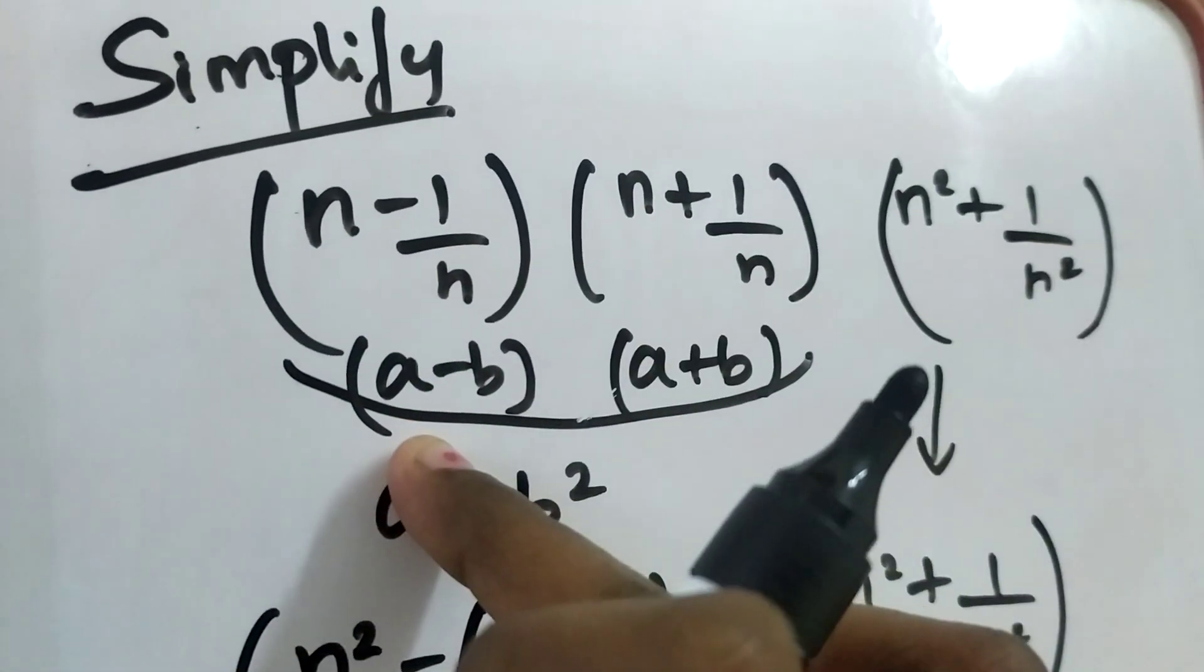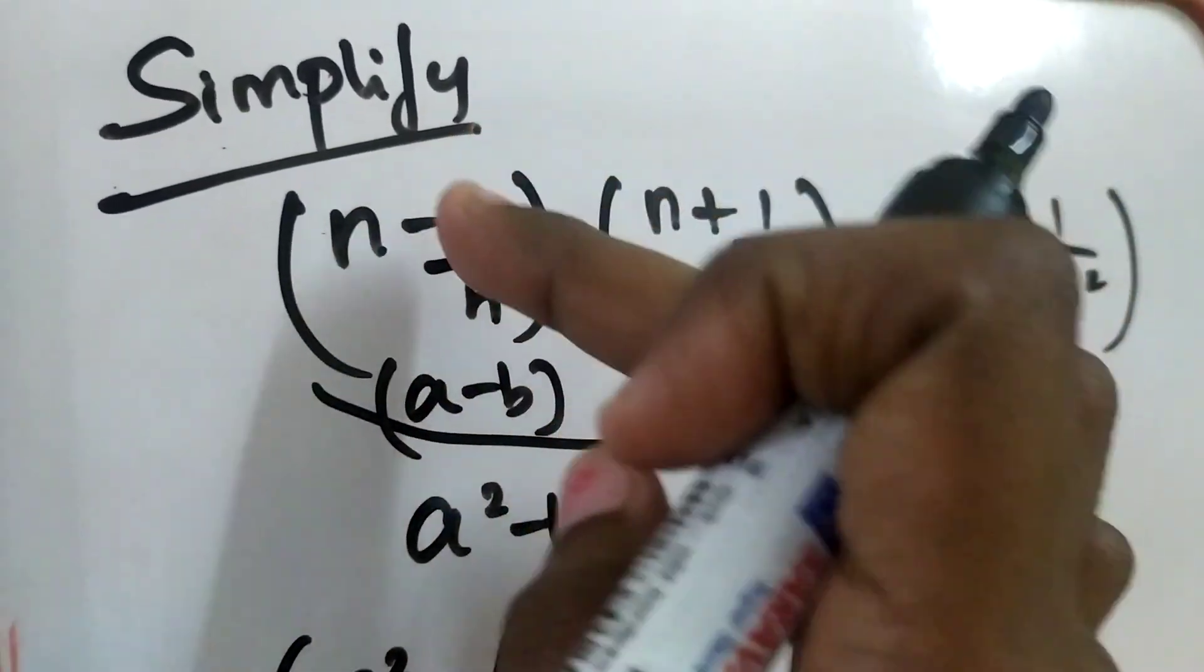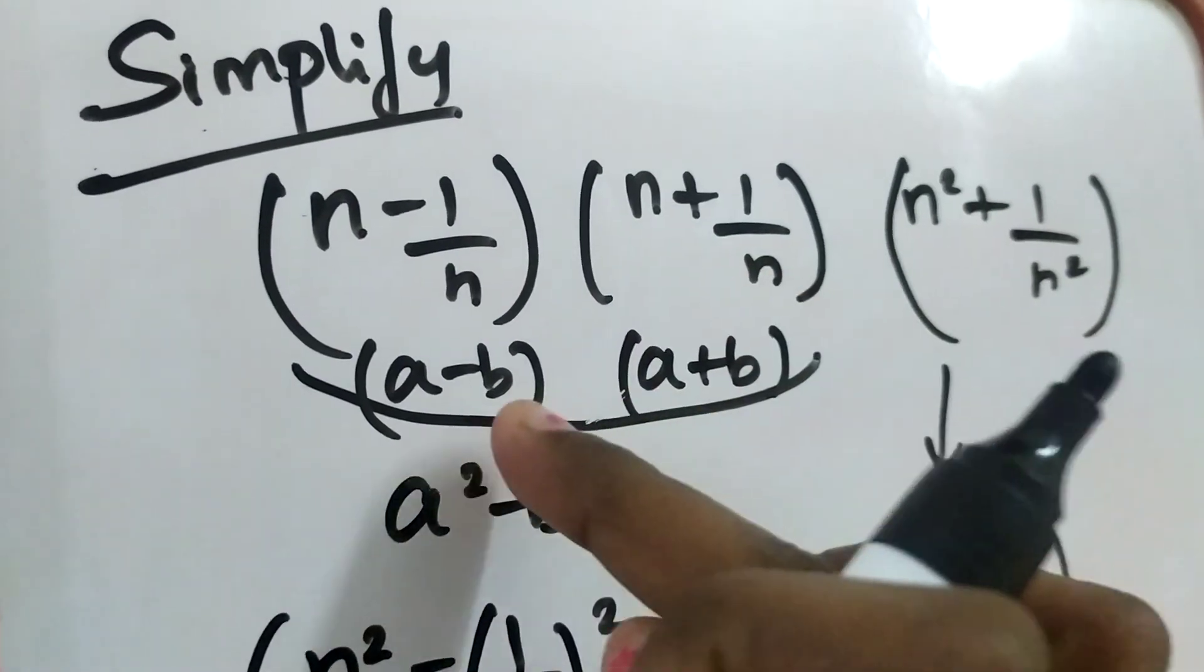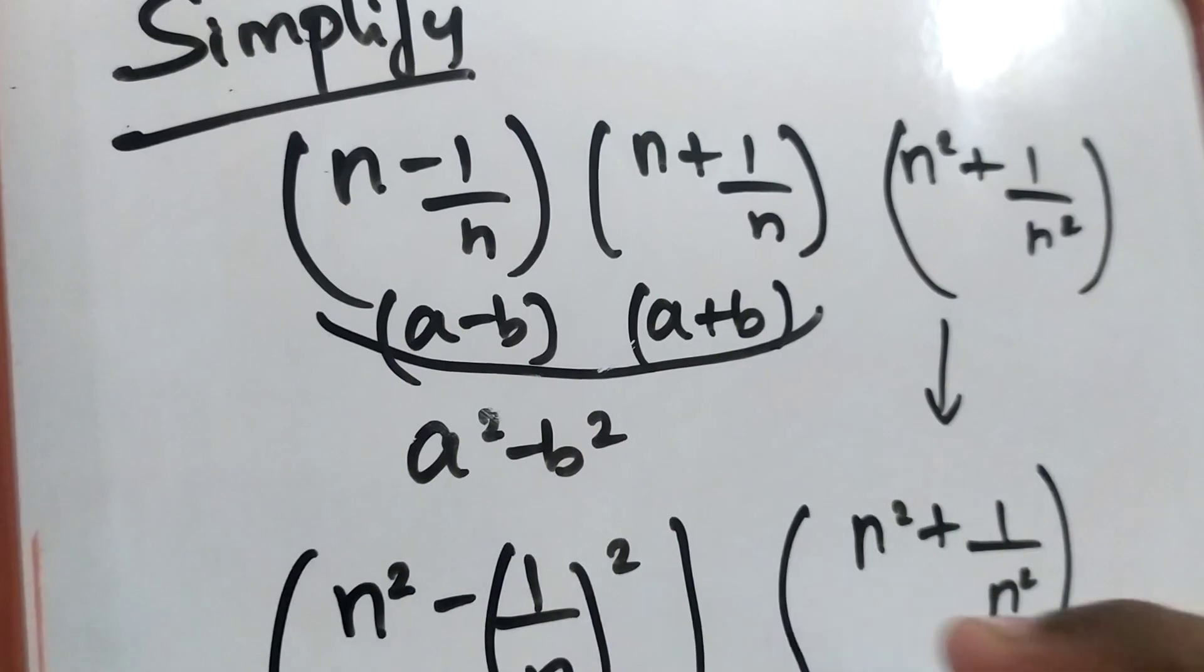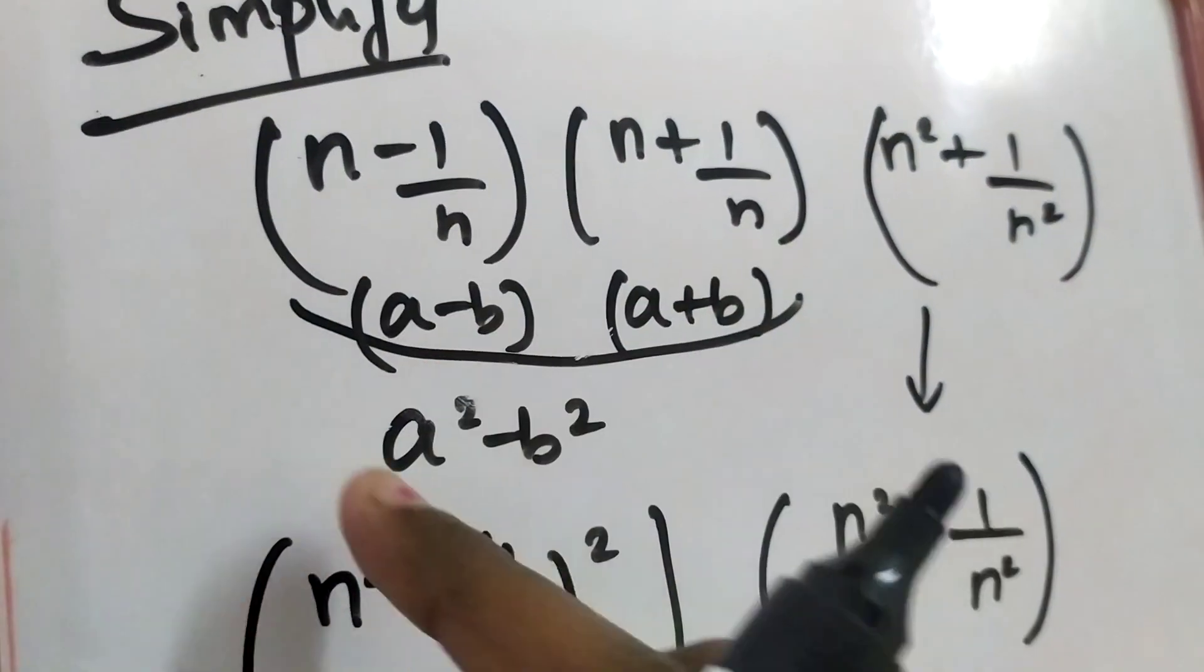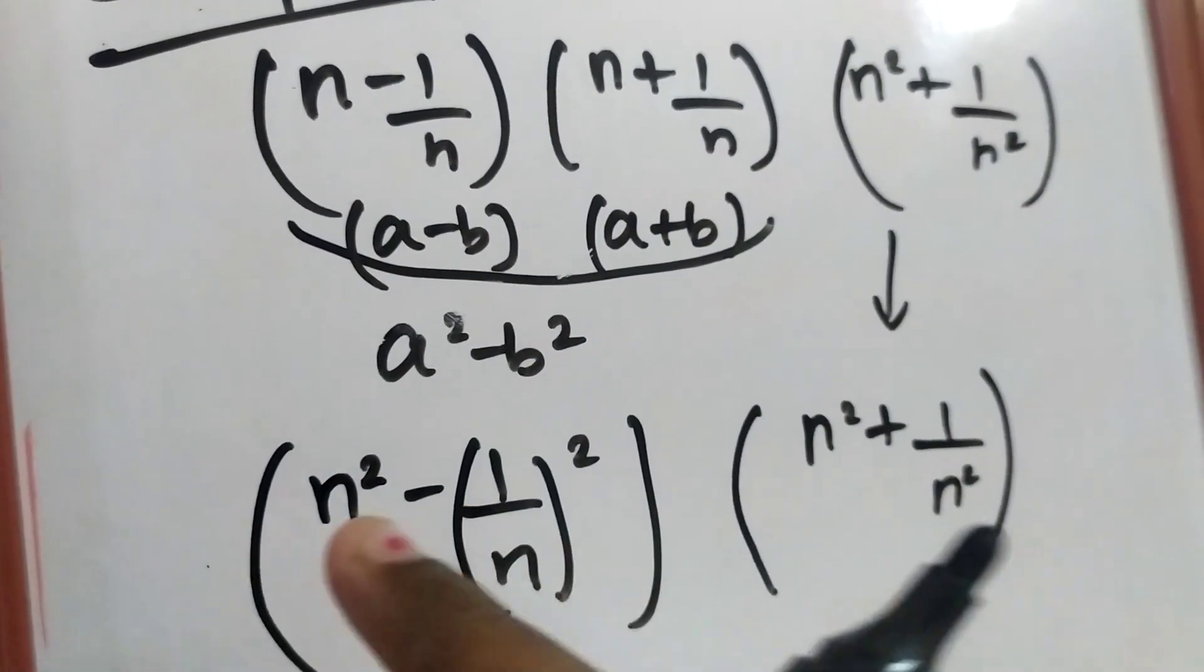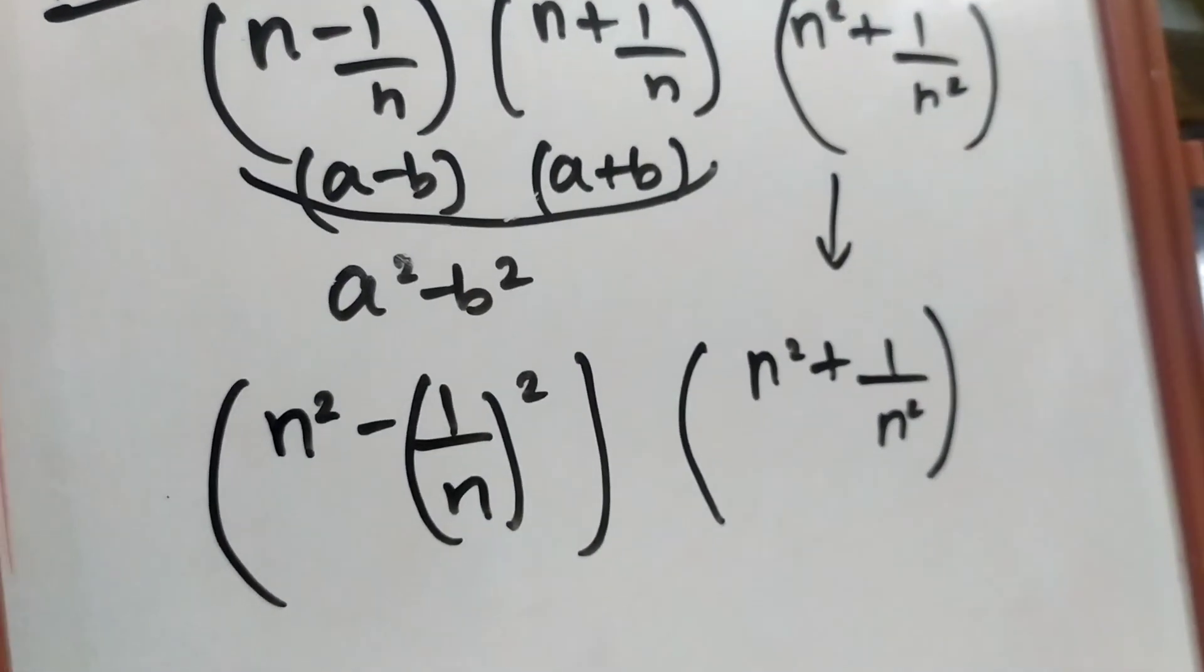So I am considering these two n as a. Here also 1 by n, here also 1 by n, so these two values are b. If there is a formula like a minus b into a plus b is a square minus b square, so I am writing like this: n square minus 1 by n square.